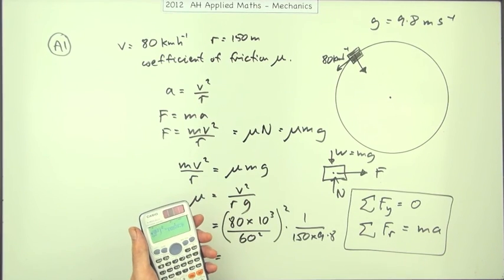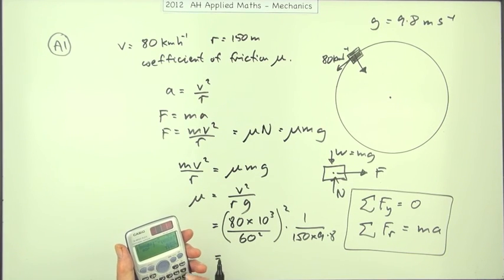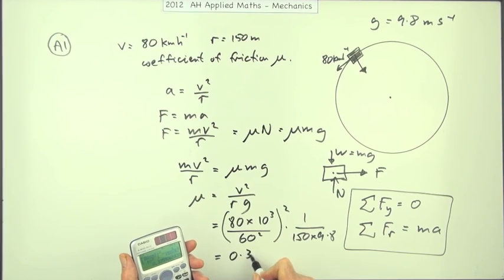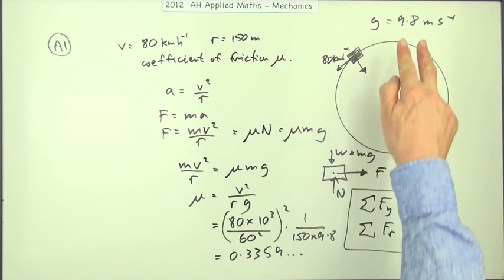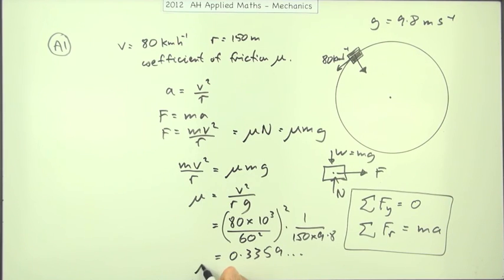And pressing in the buttons gives you 0.3359 and so on. Two significant figures. μ is 0.34. And there you go. That starts the paper off with a nice three marks.